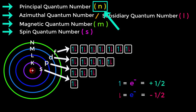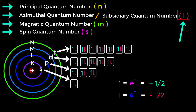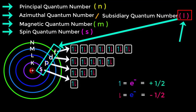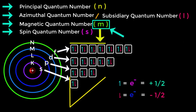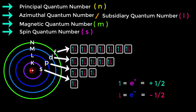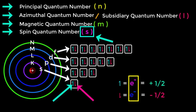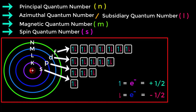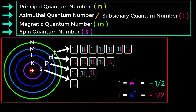N represents the shells: K, L, M, N. L represents the sub-shells: S, P, D, F. M represents the orbitals — for S: one orbital, for P: three orbitals, for D: five orbitals, for F: seven orbitals. And S represents the spin of electrons, either clockwise or anticlockwise. These are the basic introductions of the four quantum numbers.